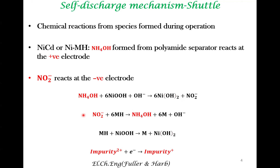The nitrite formed from this reaction may react with other components in the battery, for example the negative electrode, giving rise to regeneration of ammonium hydroxide. So the overall reaction is just a chemical reaction. We call this a shuttle mechanism because a chemical component — in this case ammonium hydroxide and nitrite — gets shuttled between one electrode and the other. These are parasitic reactions, not something we want. All these kinds of mechanisms are categorized under the shuttle mechanism.